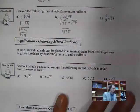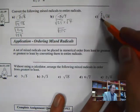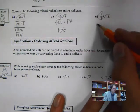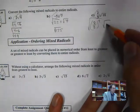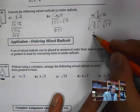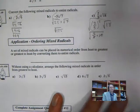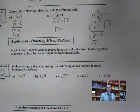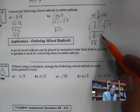For 2 thirds root 18: to put the coefficient inside the radical, we square it: 2 over 3 squared is 4 over 9. Then 4 over 9 times 18 — divide by 9 first to get 2, then multiply by 4 — gives the square root of 8.